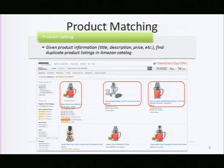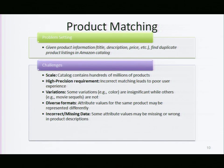When many sellers list the same product, you end up with duplicates. Here's an example of three products listed by three separate sellers that all correspond to the same underlying product — different titles, different images, but the same product. One unique characteristic of our environment is we require very high precision in matching, because this is used for pricing: we find all listings for a product and select the lowest competitor price. If you wrongly match an accessory with the main product, you may end up pricing incorrectly — and all of this is automated.